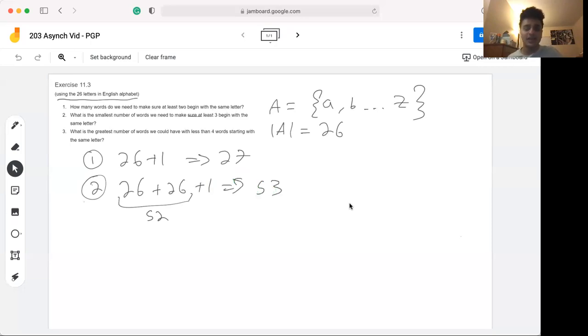Now for the third part: what is the greatest number of words we could have with less than four words starting with the same letter? This is a little bit on the trickier end.